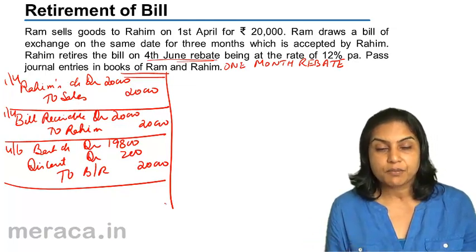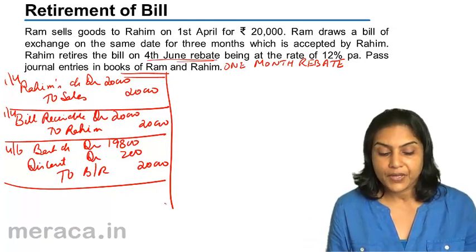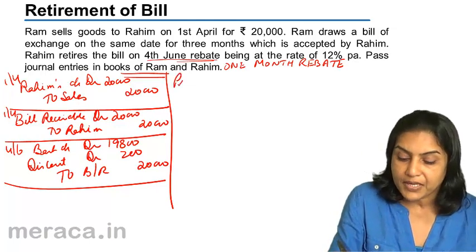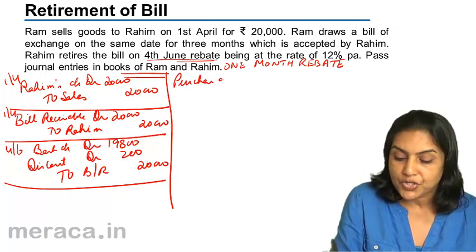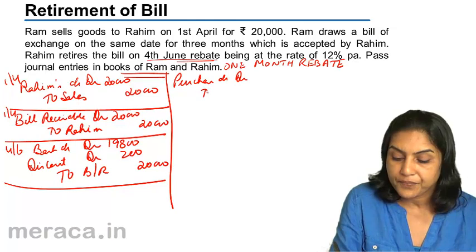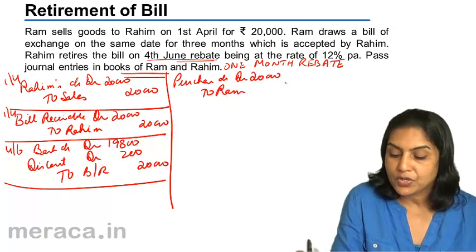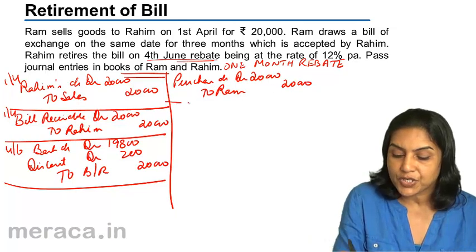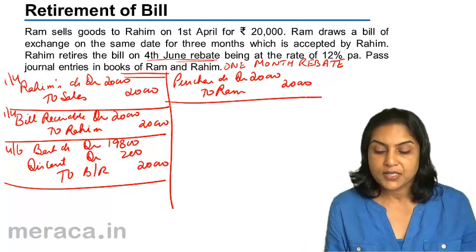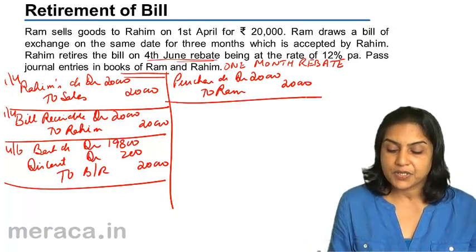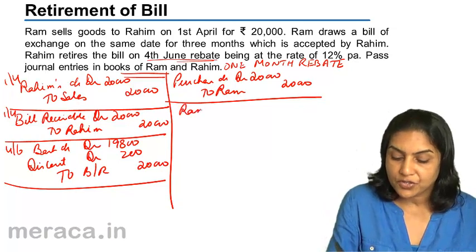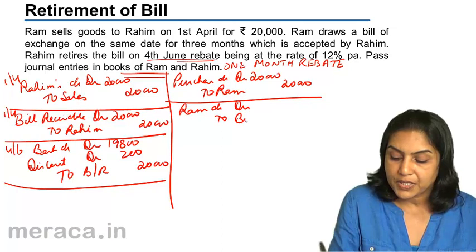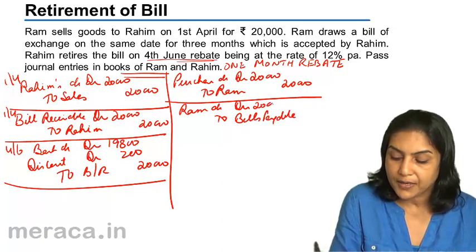In the books of Rahim: Rahim makes a purchase, so purchases account debit to Ram's account 20,000. Next, Rahim accepts the bill of exchange and gives it to Ram, so Ram's account debit to bills payable account 20,000.